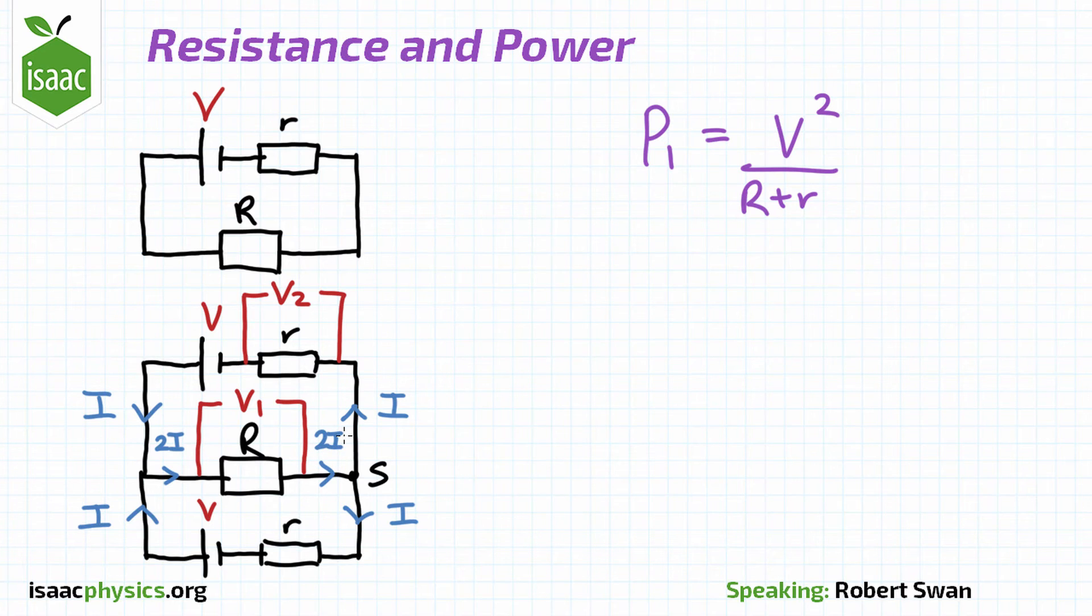Expressing the currents using Ohm's law, we get 2I equals V1 over uppercase R, and I equals V2 over lowercase r. By Kirchhoff's voltage law for either of the loops in the circuit, V equals V1 plus V2.